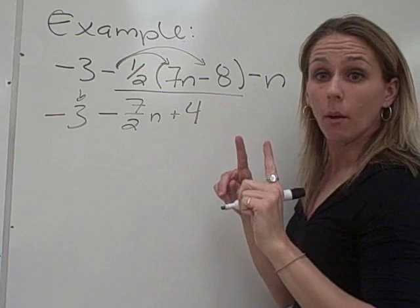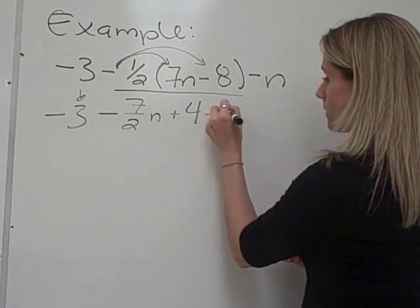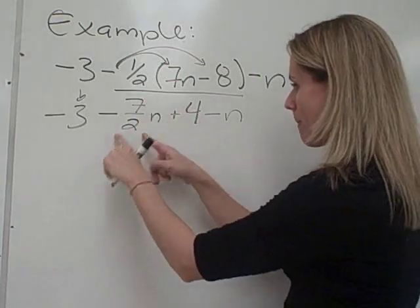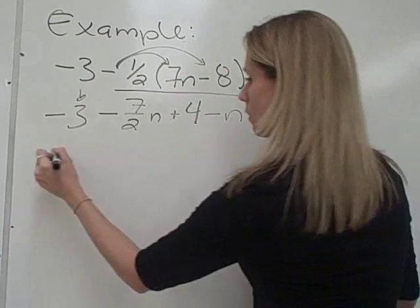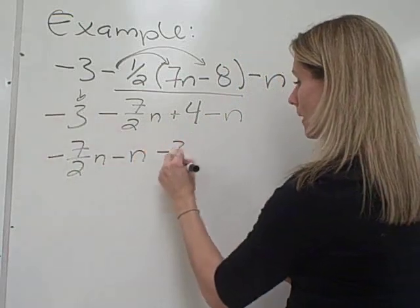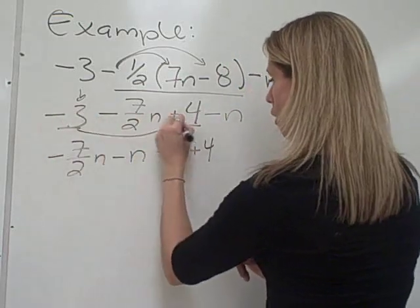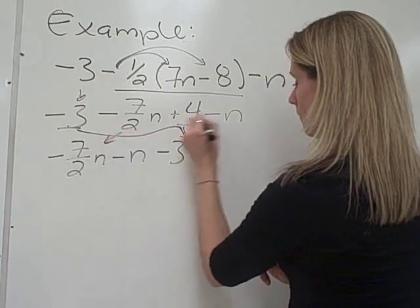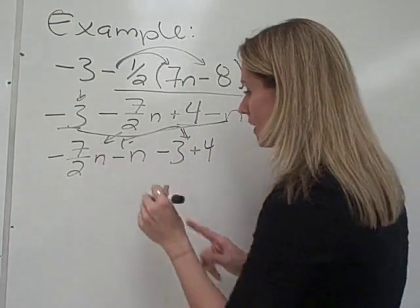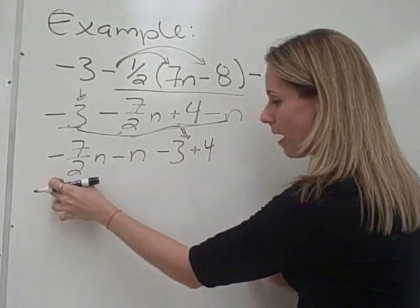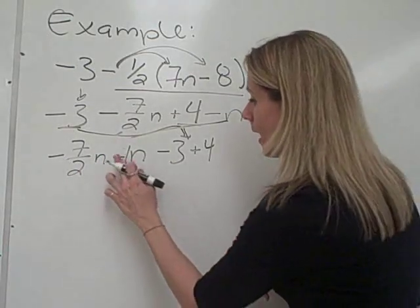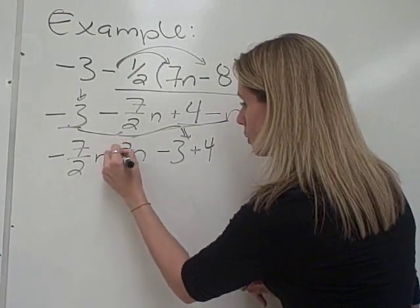Now, I might want to combine terms, but wait, I forgot that minus n. So let's bring that back. Now, I know that I can combine minus 7 halves n minus n. So I'll put those together. I'm also going to put together the minus 3 plus 4. And once I've done that, I've got all my terms somewhere. Okay, so a good thing to notice here is that if I want to combine a 7 halves with a minus n, I need to remember that really the coefficient in front of the n is just 1. And because of that, I'm going to write it as 2 over 2.